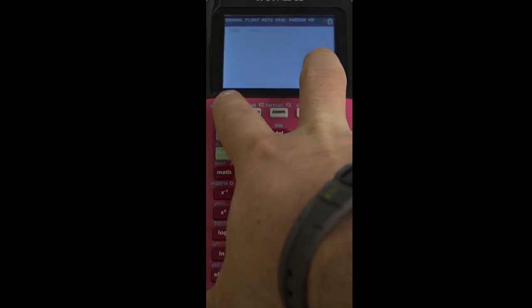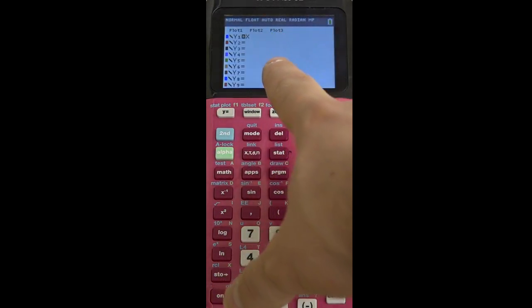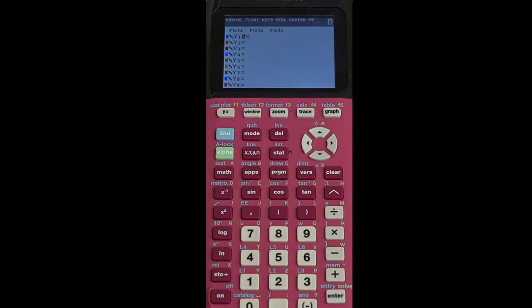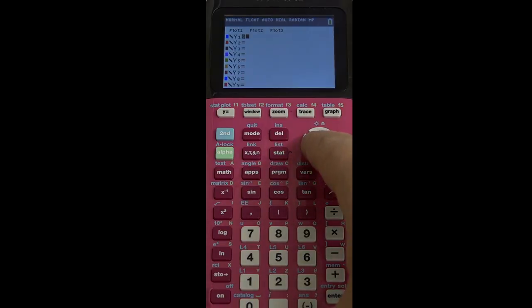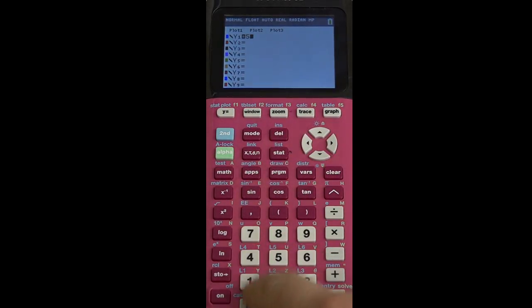If you press the y equals button up here, this is where we can put in a bunch of different functions. And you can see I've got the most basic function of all, y equals x. We could do anything we wanted in here like y equals 50, which would get us a nice horizontal line. This is where you're going to put a function as given to you by some function definition where f of x equals something and you can just graph the function.